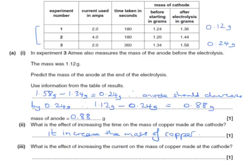What's the effect of increasing the current on the mass of copper made? We need to compare experiment one with experiment two. Experiment one, with 2 amps, produces 0.12 grams of copper. Experiment two, using the same number of seconds but 4 amps, produces 0.24 grams of copper. Therefore, increasing the current increases the mass of copper.